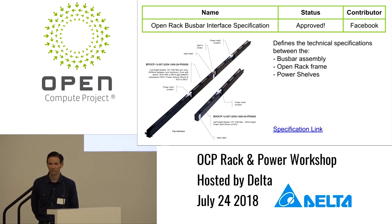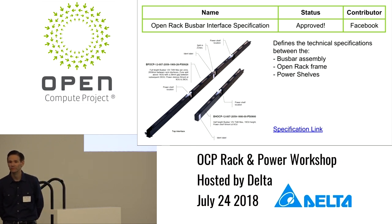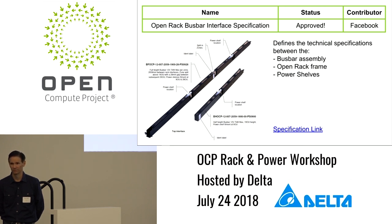The interface point doesn't change. The overriding OCP interface point where the clipping gauge is stays the same, and then you can choose. The connection points at the end of the rack remain the same always per the spec, and then you can innovate around that space on how you join everything together.